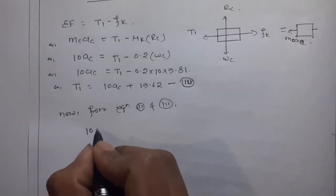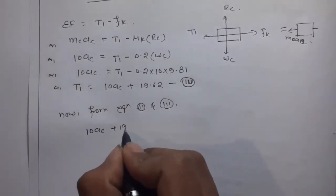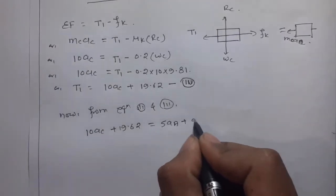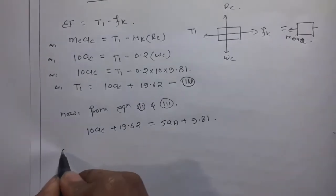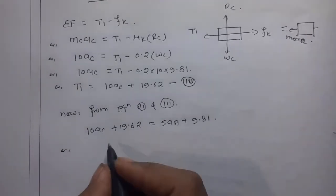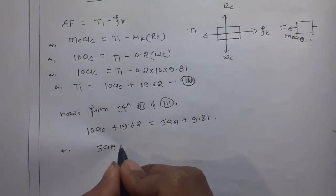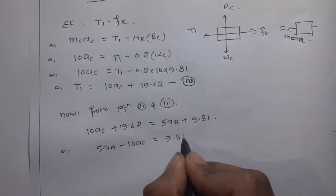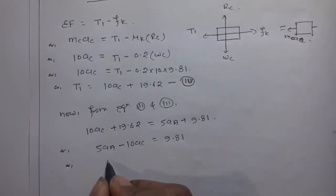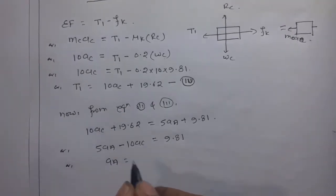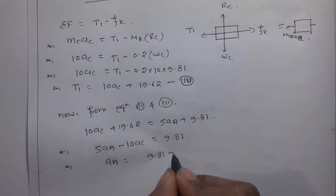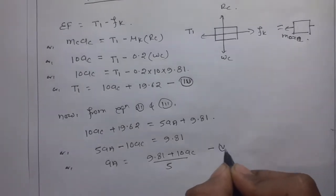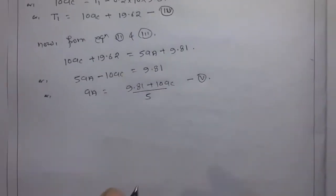Setting Equation 4 equal to Equation 2: 10AC + 19.62 = 5AA + 9.81, which gives 10AC = 9.81 + 5AA, so AA = (9.81 + 10AC) / 5. This is Equation 5.